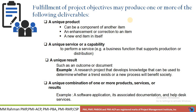Another type of project output is an outcome or document — the result. A document is a result. The output can also be a unique combination of one or more products, service, or result — combining two or more of these three elements.